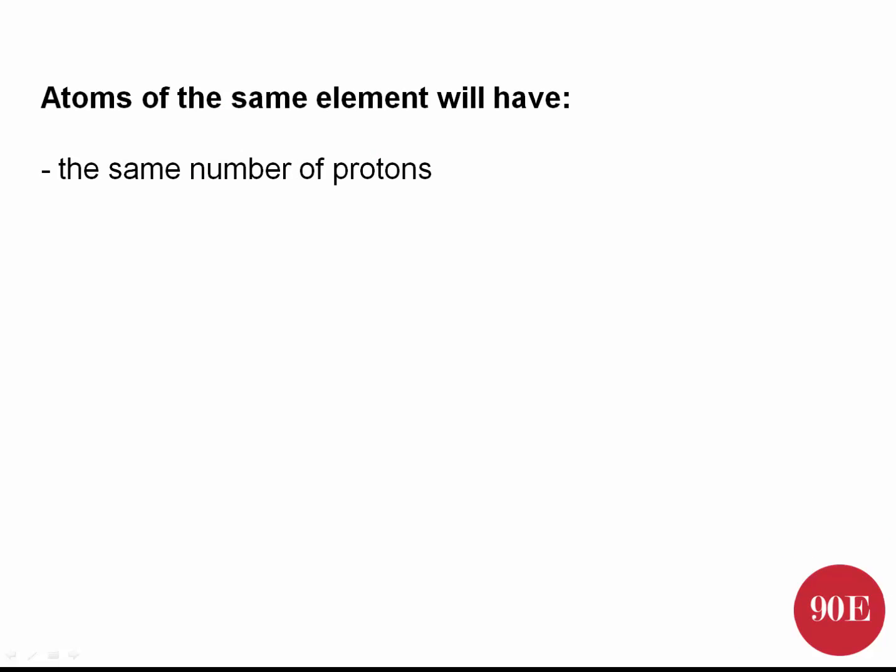The most important concept we're going to talk about in this video is this very first one: atoms of the same element will have the same number of protons. We call that number the atomic number. So we can look at the atomic number of different elements, for instance carbon or hydrogen, and find out what the atomic number is and how many protons are in that atom. All carbon atoms will have the same atomic number; all hydrogen atoms will have the same atomic number.